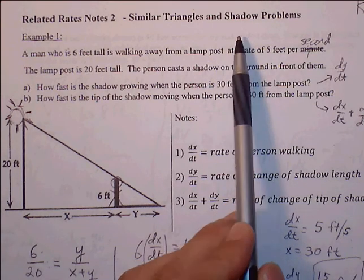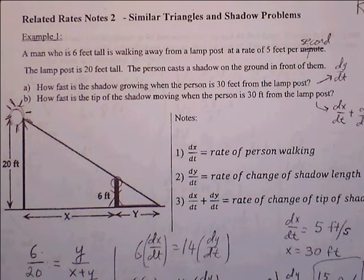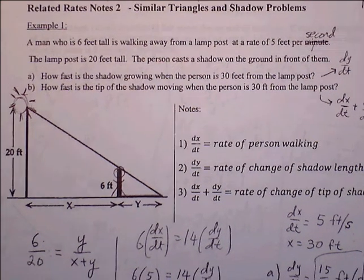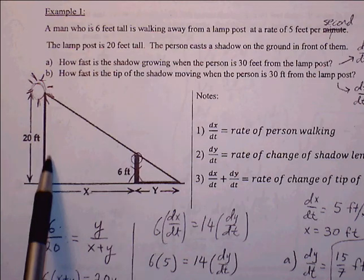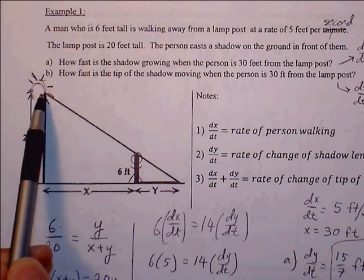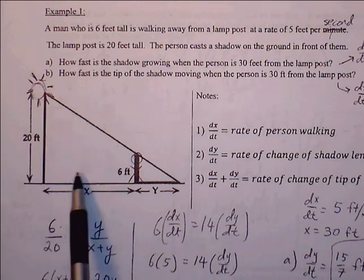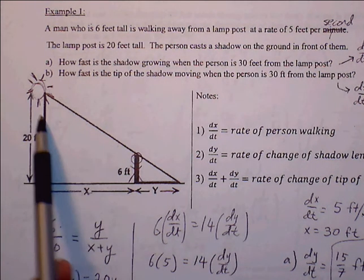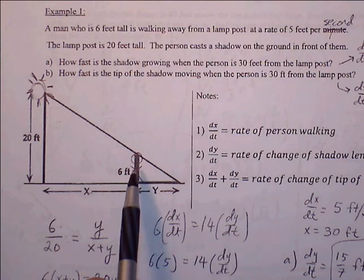This is Related Rates Notes 2, specifically on similar triangles and shadow problems. Let's look at Example 1 and walk through these types of problems, which are similar and show up numerous times later on in homework as well as potentially AP problems.